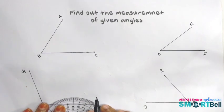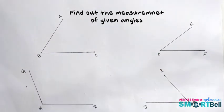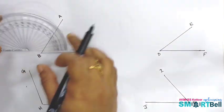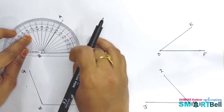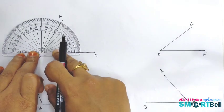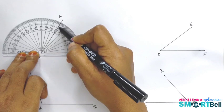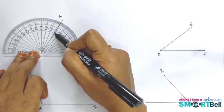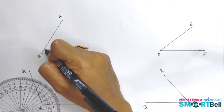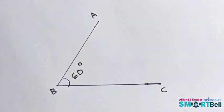Children, we have another activity to do. We have some angles. We need to find out the measurement or degrees. Okay, first place the center point of the protractor on the vertex. Look at this figure. The line passes through the number 60. So, the angle is 60 degrees.